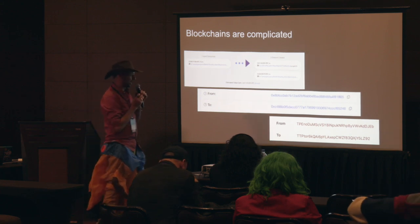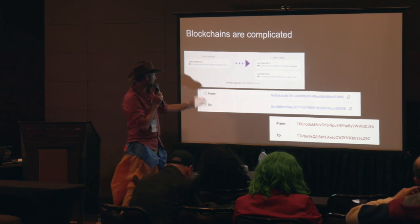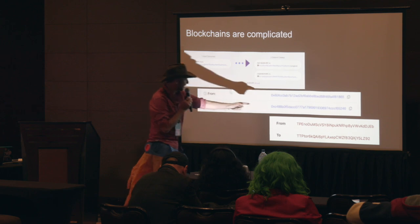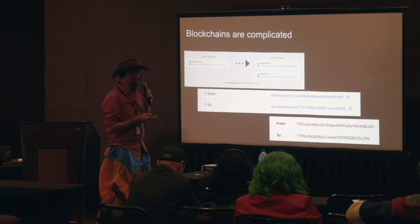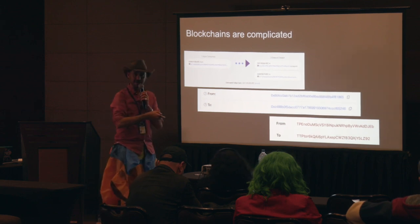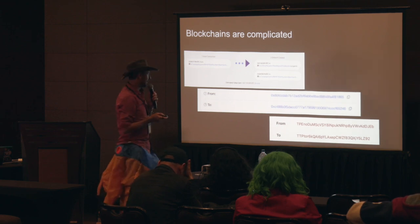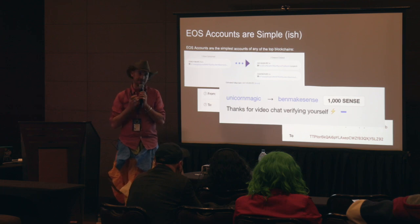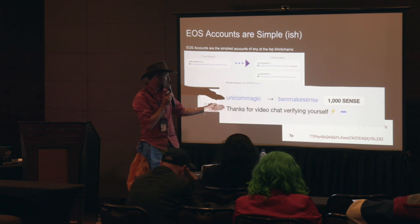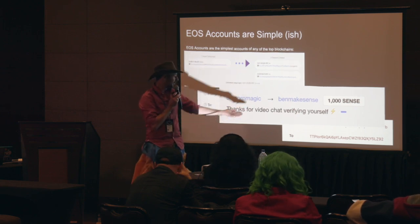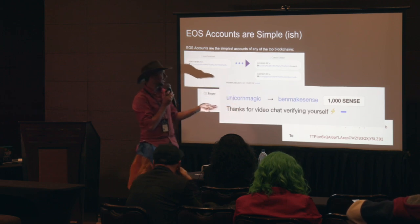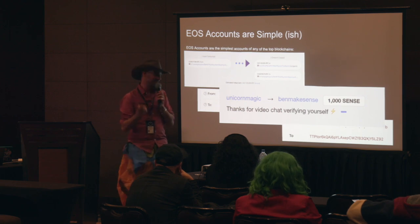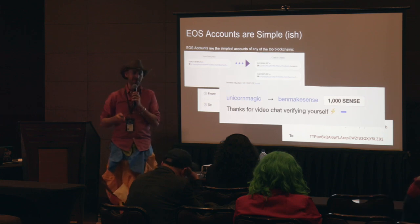Blockchains are super complicated — it's a huge barrier to adoption. Here are three transactions: a Bitcoin transaction, an Ethereum transaction, and a Tron transaction. The from and to addresses are incredibly hard to read. It's really unlikely anyone could ever remember these. EOS does a much better job by allowing you to have account names — a 12-letter human-readable name. For example, 'unicorn magic' is Crystal's account sending me a thousand Sense tokens. You can see how much simpler this makes encrypted communication, which is something we actually do in Sense Chat using EOS accounts. You can send me a totally encrypted message at BenMakesSense that no one will ever be able to read except you and me.